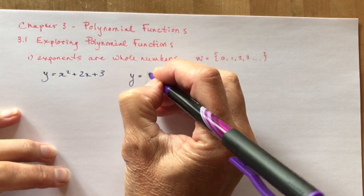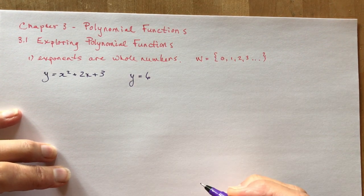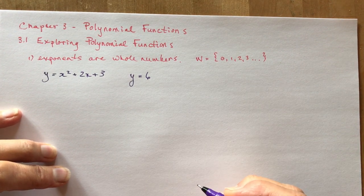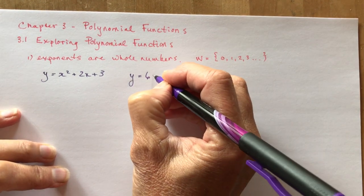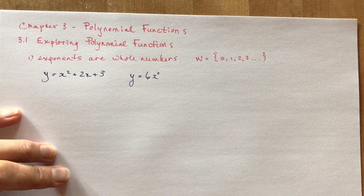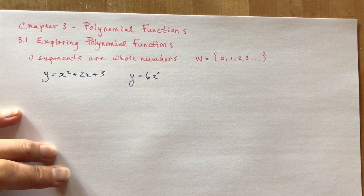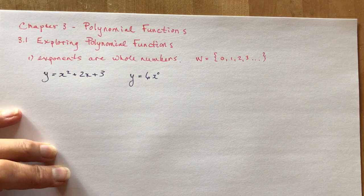What if I had y equals 6? Is that a polynomial function? Absolutely. What is the power of the x? We could write x to the power of 0, couldn't we? That's a polynomial function. It has a whole number.